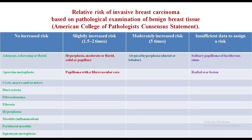There is also slight risk, that is 1.5 to 2 times. In this category, hyperplasia — moderate or florid, solid or papillary — is an example, and papilloma with fibrovascular core is another. The important ones with no increased risk include adenosis, sclerosing or florid. This table is very important and it is from Williams and Love. You should remember this table.